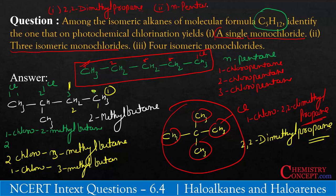And the one which gives four isomeric monochlorides is 2-methylbutane.